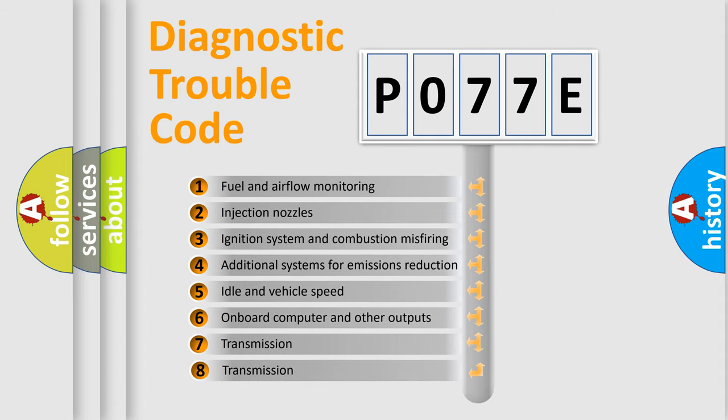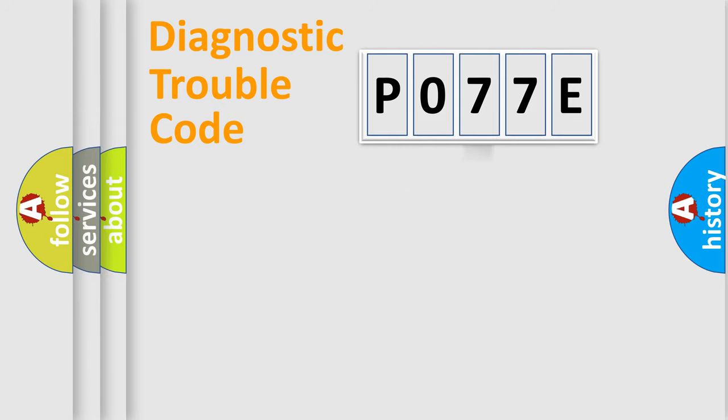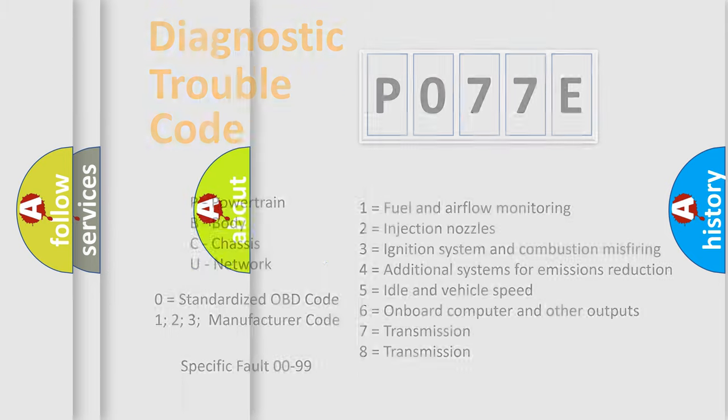The third character specifies a subset of errors. The distribution shown is valid only for the standardized DTC code. Only the last two characters define the specific fault of the group. Let's not forget that such a division is valid only if the second character code is expressed by the number zero.